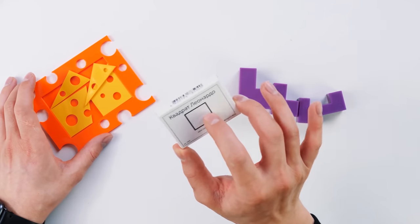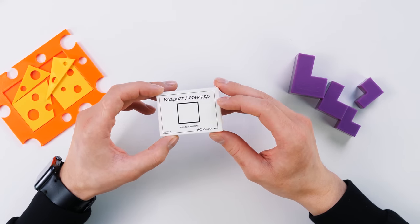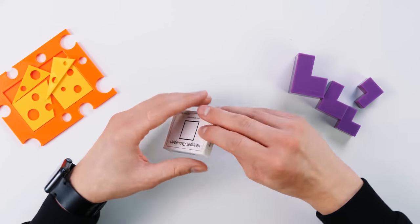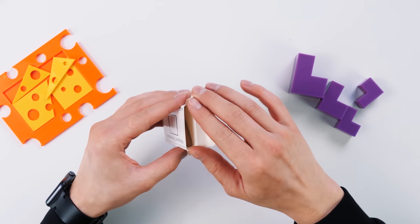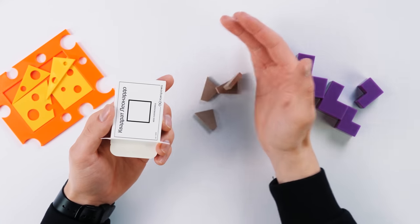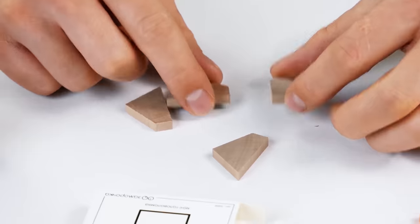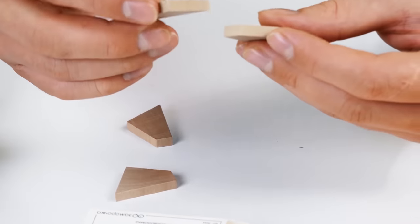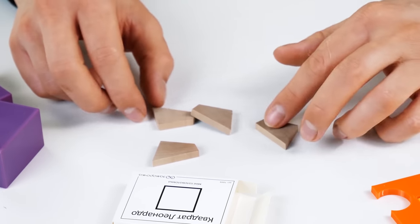And let's start with the small but no less interesting puzzle, which is called the Leonardo Square. This is a pocket puzzle. Here we need to assemble a full-fledged even square from these four pieces. Let's try to do this. I don't think this puzzle is going to be that hard to solve, because all the details are the same.